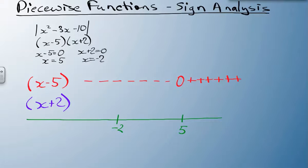Switch down to our x plus 2. Now we know that that one equals zero at minus 2. Let's put a zero in there. And anything less than minus 2, it's going to be negative. Anything greater than minus 2, it's going to be positive.